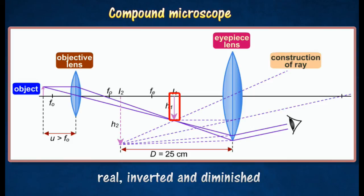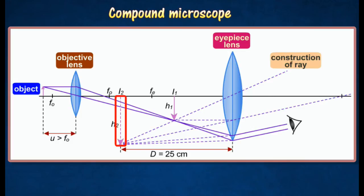Image I1 becomes the object for the eyepiece. The eyepiece is adjusted until I1 is nearer to the lens than its focal length, thus acts as a magnifying glass to produce final image I2, which is virtual, inverted, and magnified.